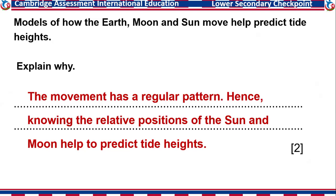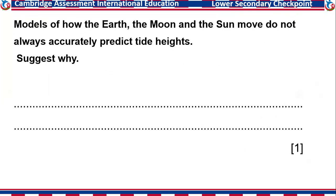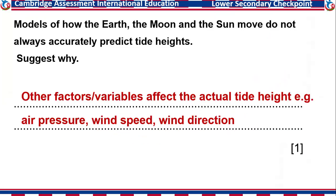Models of how the Earth, Moon, and Sun move do not always accurately predict tide heights — why? There are other factors that can affect actual tide heights. For instance, air pressure can affect it, wind speed can affect it, and wind direction can affect it. These factors are not included in the model, so that is why models do not always accurately predict tide heights.